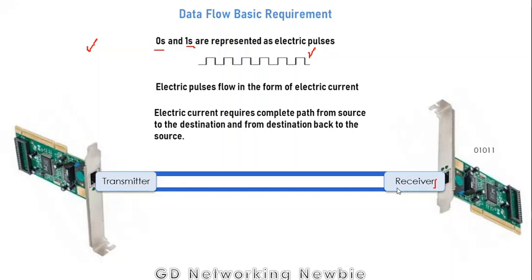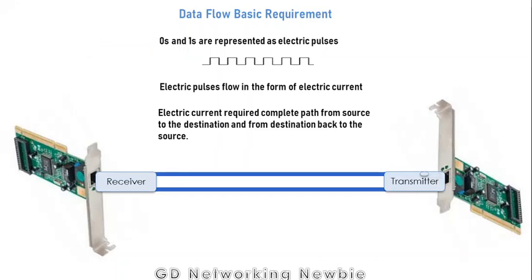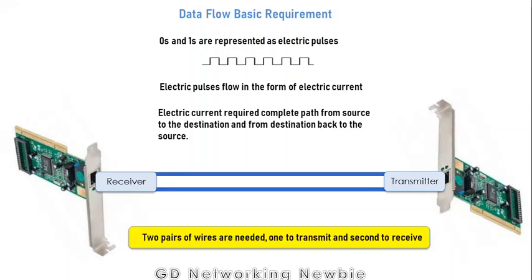For transmission, we need two wires to complete a path, and similarly for reception we need another two wires. So two pairs of wires are needed — one pair to transmit and one pair to receive.